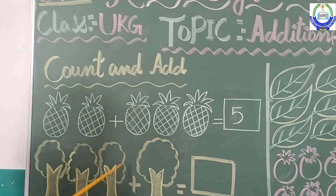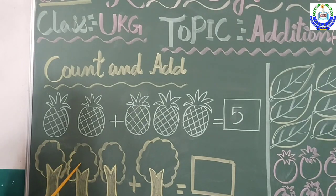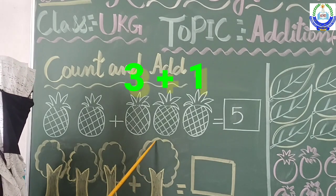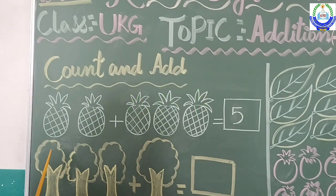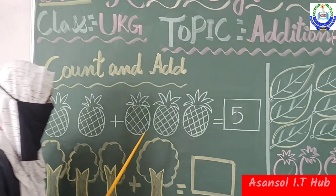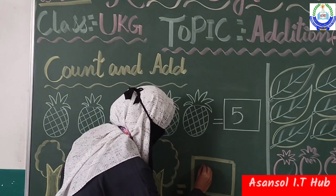What are these, students? These are pictures of trees. How many trees are there? Let's count them: 1, 2, 3 — there are 3 trees. Plus 1 — this is 1 tree. So let's count them all: 1, 2, 3, and 4. We will write here: 4.